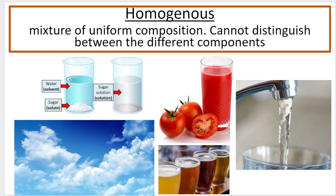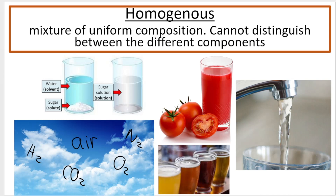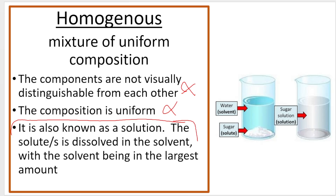A homogeneous mixture is a mixture of uniform composition — you cannot distinguish between the different components. Air is one example: it's a mixture of all the different types of gases — nitrogen, hydrogen, oxygen, CO₂ — and you cannot see the differences; it all looks the same. Another example is dissolving a solute like salt or sugar in water, which is a solvent, creating what we call a solution. The composition is uniform throughout. We've got a solute dissolved in a solvent, causing a solution. That is homogeneous.